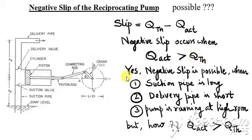The answer to the question is yes, negative slip is possible. That is, actual discharge can be greater than theoretical discharge under the following conditions.